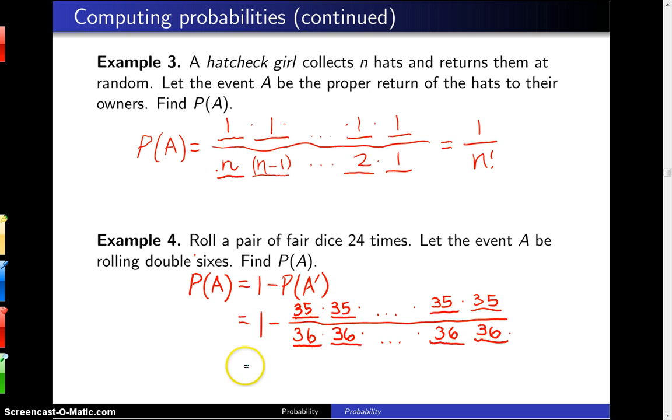So this becomes 1 minus 35 raised to the 24th power, and if you work that out on a calculator you will find this is 0.4914.